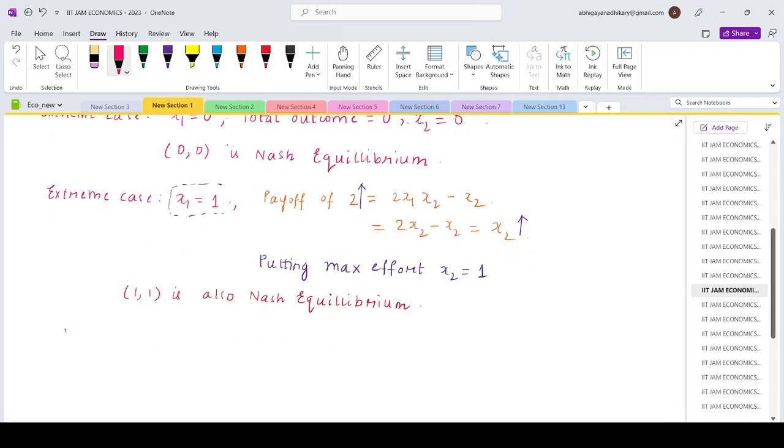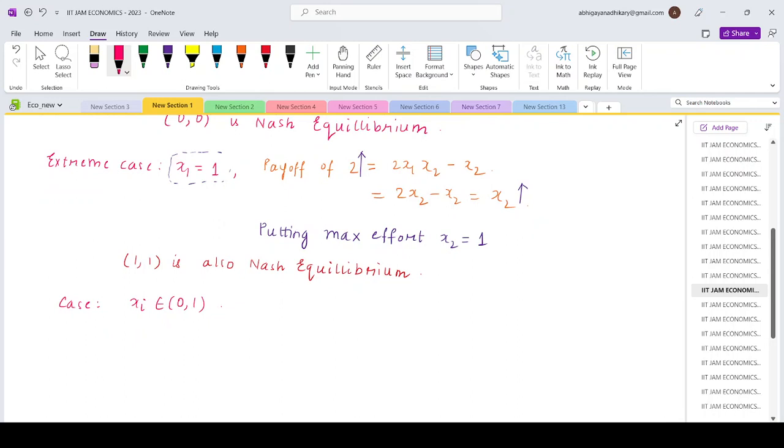Now let's come to the case where xi lies between 0 and 1, some intermediate effort. In that case, the total outcome will be a positive value. So that will be shared equally.